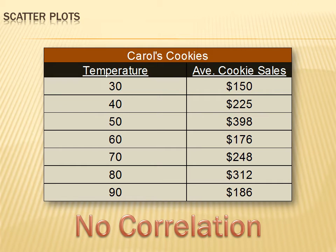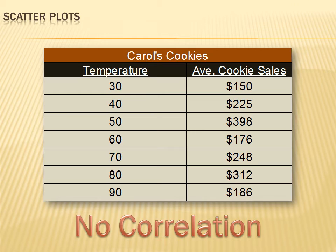Of course, sometimes there's no correlation between the two variables. For instance, Carol's Cookies is a cookie store, and she wanted to find out if her cookie sales varied as the temperature went up. On days when the high temperature was 30, her average cookie sales were $150; on days when the high was 40, her average cookie sales were $225. She did that for every temperature between 30 and 90. Do you see a relationship? I don't think I do, but it'll be easier to understand if we create a scatter graph.